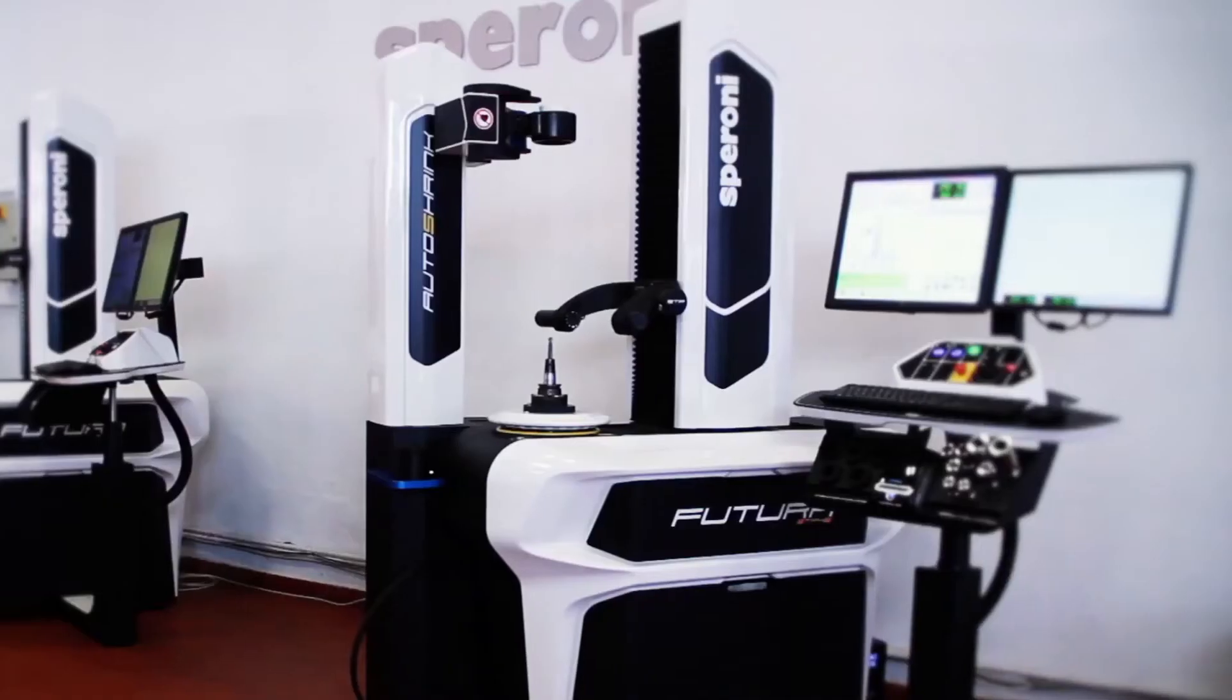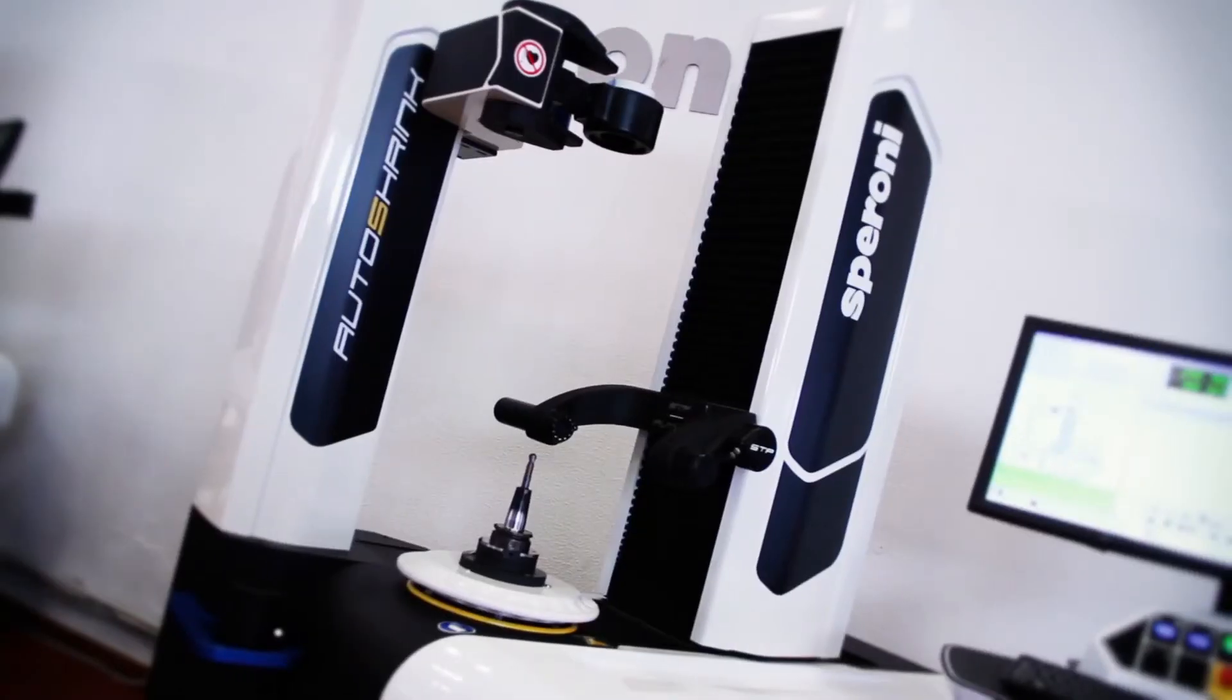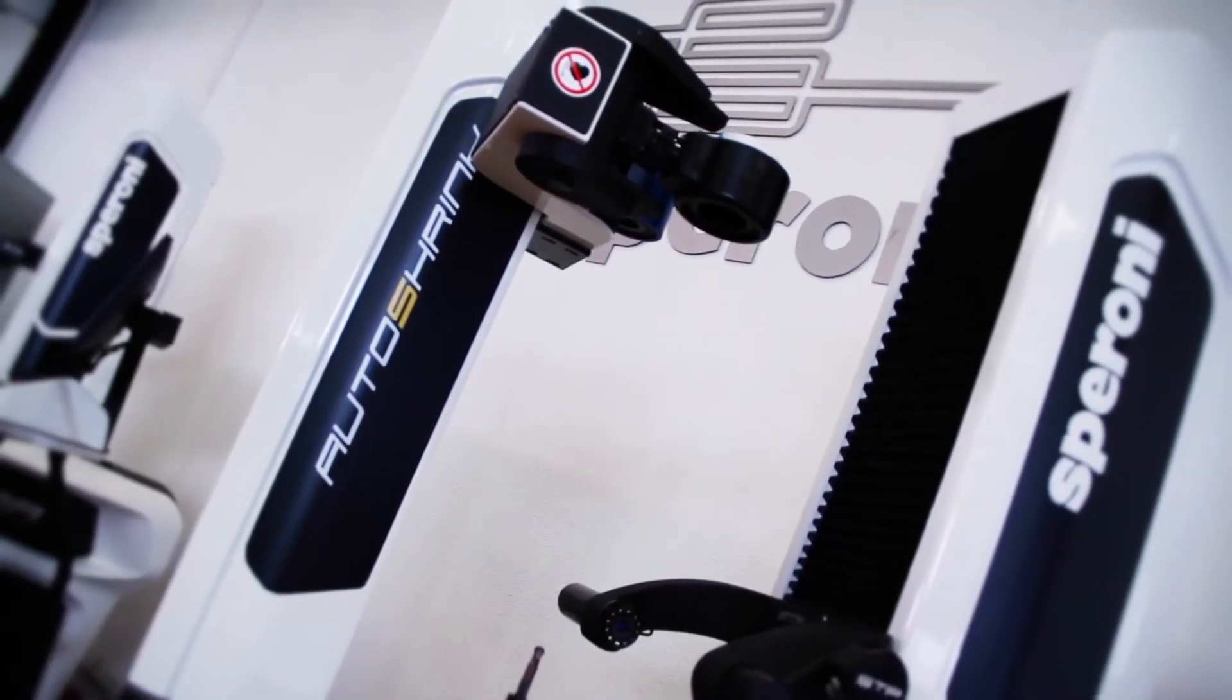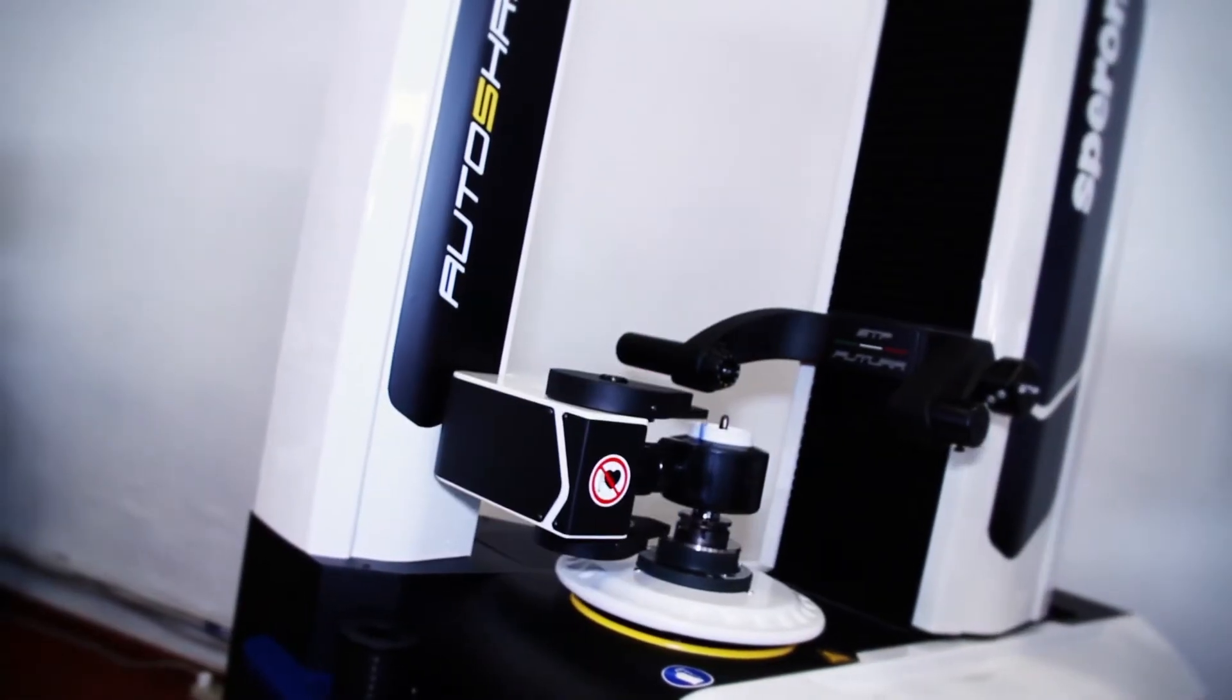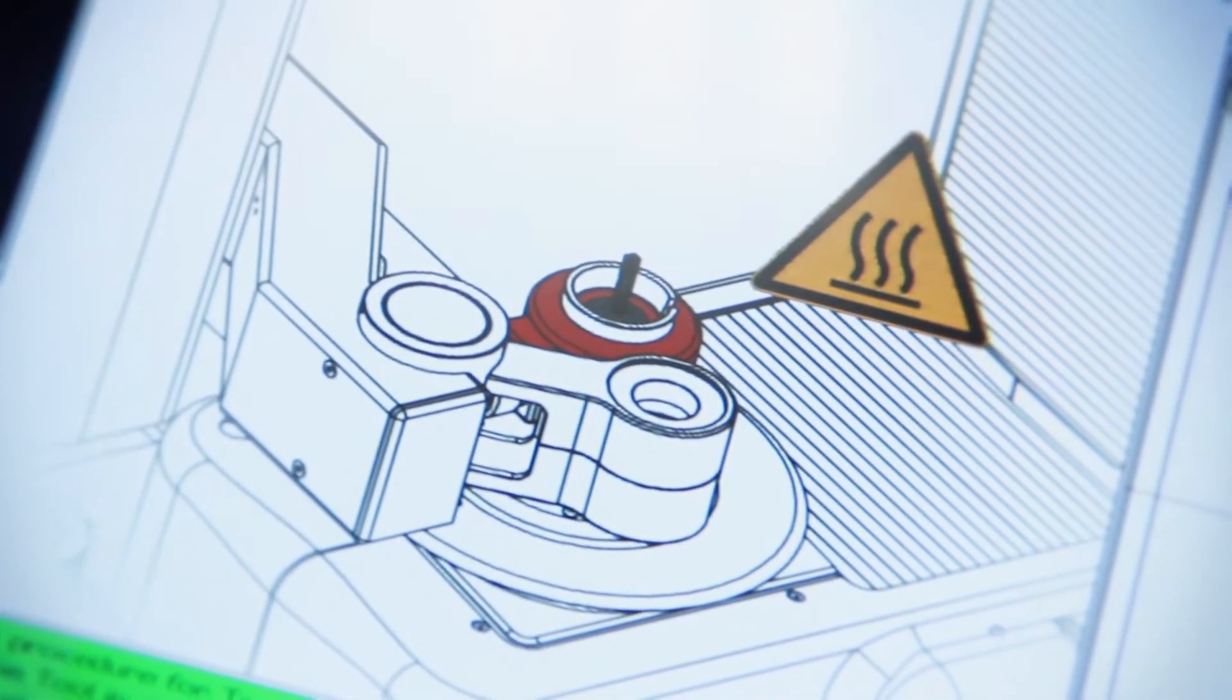Fully integrated tool presetting with shrink technology was developed first by Speroni in 1998. STP Futura Auto Shrink is the fourth generation of this groundbreaking innovation.